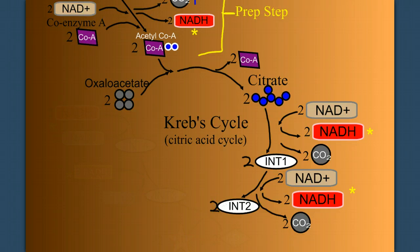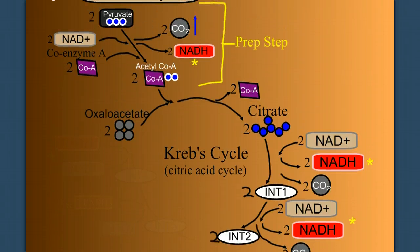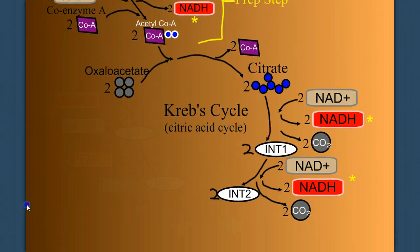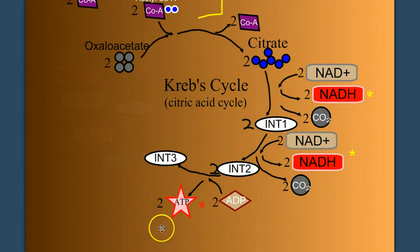Now let's not forget the point of what we're trying to do. We're trying to make ATP, and so far we have not made any. In this next change, intermediate 2 becomes intermediate 3, and in doing so we do make our first two ATP. Two intermediates to make two ATP, and we do this by substrate level phosphorylation.